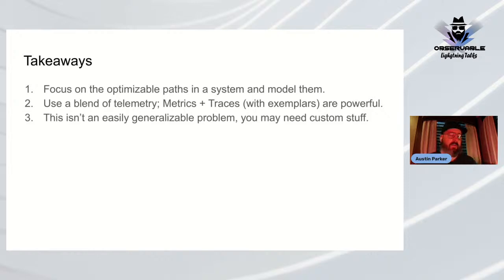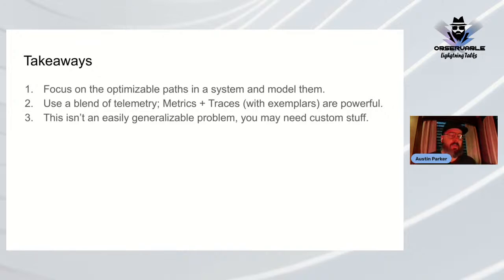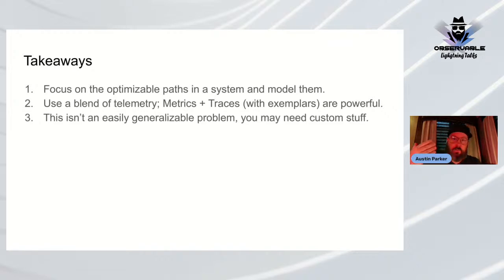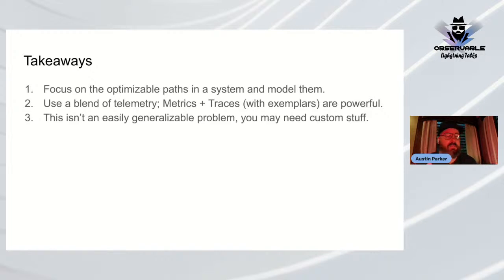With span links, you can query 'show me everything related to this loan ID' and see a cluster of related items without shoving everything into one massive trace. Takeaway two: blend telemetry types. For counting steps or detecting out-of-spec behavior, histograms or metrics may be more appropriate than traces. You can use high-cardinality and low-cardinality signals together, and exemplars — especially with histograms — are a powerful way to bridge them.